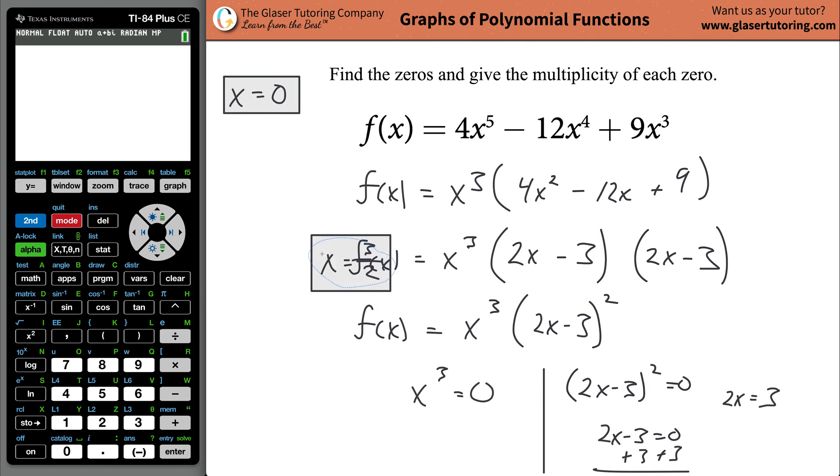Now to give the multiplicity of each of these zeros, all you have to do is look at the powers. That's all you have to do. So when you solve for the x-intercept value, or the zero value of x equals zero, you used this term right here. And what was the exponent of it? The exponent was 3. So guess what the multiplicity is? It's equal to 3. It's going to be the same thing as the exponent of that factor. And that's why I combine this into a single one. Because now, this zero value that we found came from this factor, and it had a power of 2, and therefore, that's going to be the multiplicity. 2. And that's all it is. Now you found the multiplicities, you found the zeros, and that's really the end of the problem.